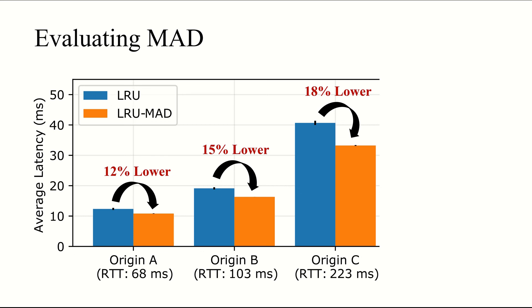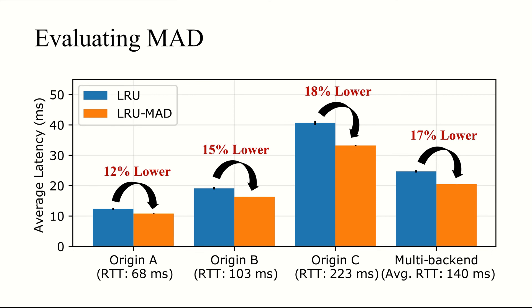Here's an interesting question. What happens when multiple non-uniform backing store latencies are involved? That is, different objects experience different miss latencies. To answer this, we distributed our objects uniformly among the three origins, and re-ran our experiments. The bars labeled multi-backend represent this scenario. Despite the fact that this differs significantly from our theoretical formulation, MAD generalizes to this scenario as well, yielding a latency improvement of 17% over LRU.